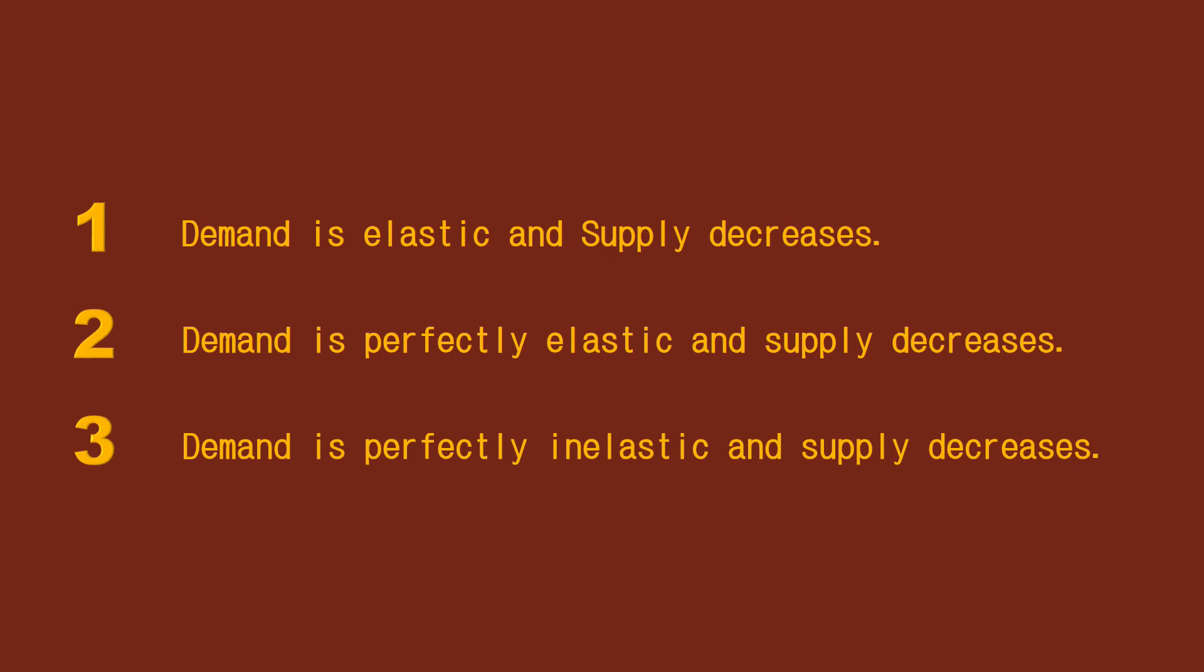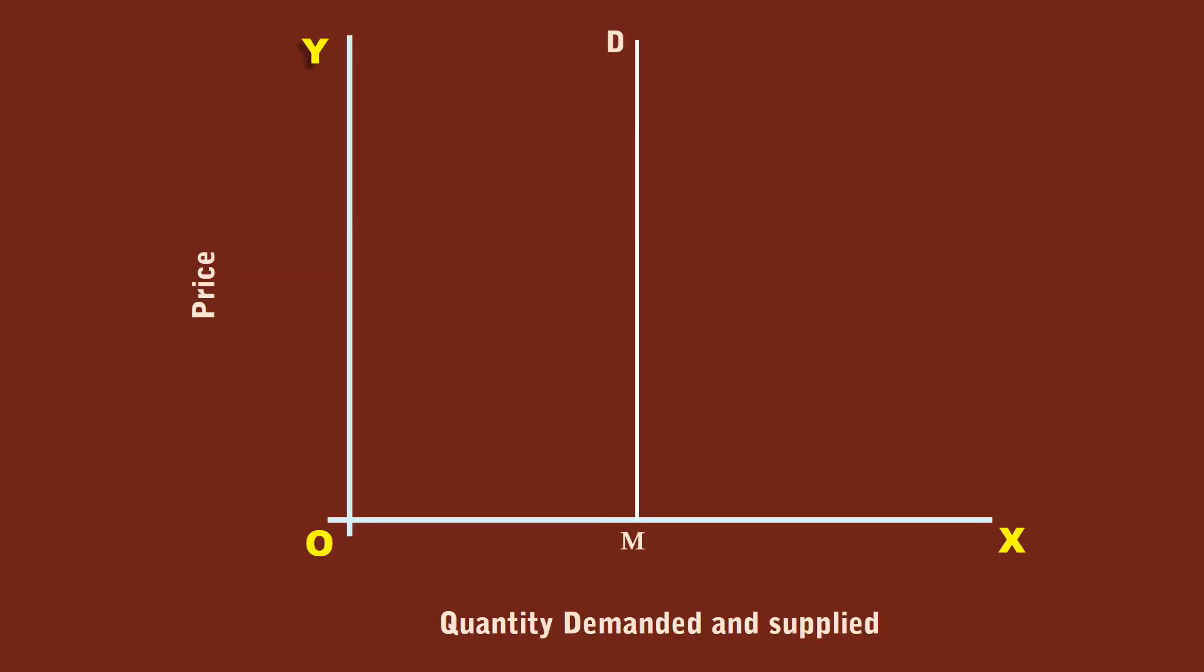3. Demand is perfectly inelastic and supply decreases. Market demand curve MD is perfectly inelastic, hence the demand curve is vertical and parallel to Y axis. The supply curve SS cuts the demand curve MD at E1. The equilibrium price is P1 and quantity is M.